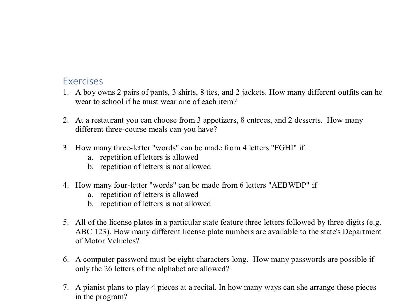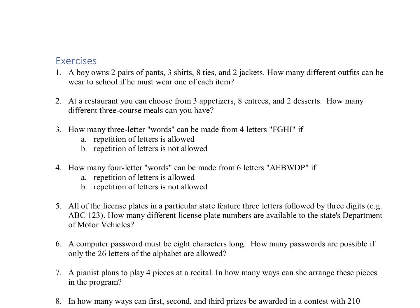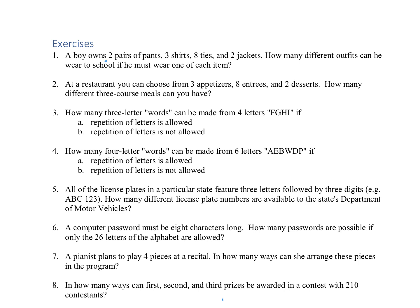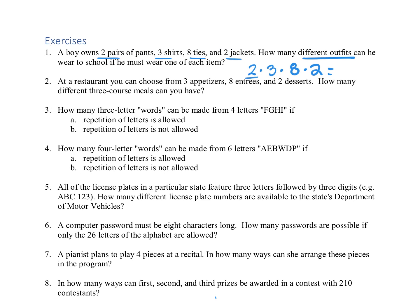All right, we're going to look at the counting exercises. So we're going to be using combinations, permutations, and the fundamental counting principle. For the first one here, we have a boy wearing two pairs of pants, three shirts, eight ties, and two jackets. How many different outfits can he make? We're going to use that fundamental counting principle. There are two ways to choose his pants, then three ways to choose shirts, eight ways to choose the ties, two ways to do the jacket. We could just multiply these all together to get our answer, which will be 96 different outfits.